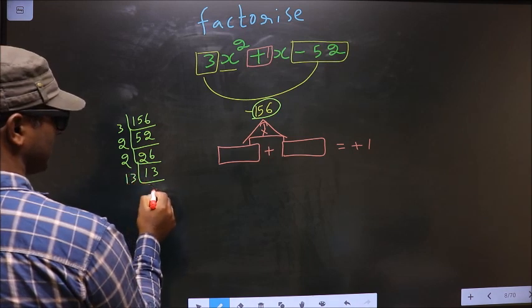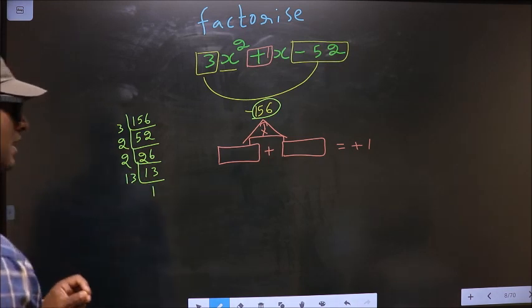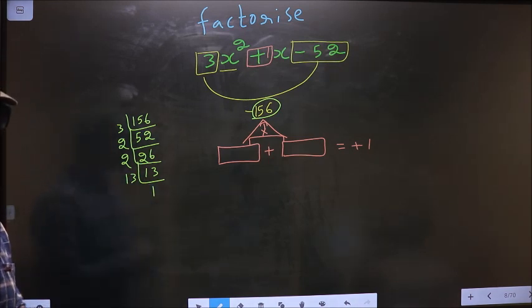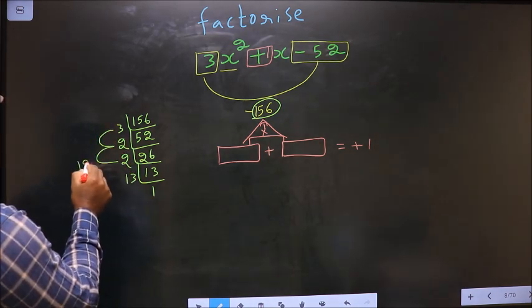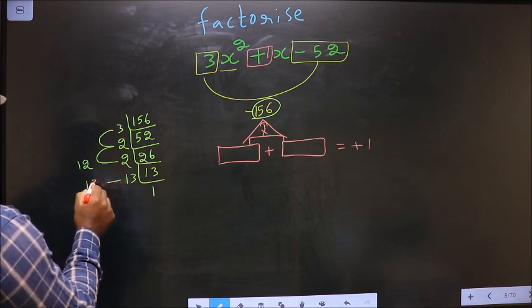Now 13 is prime, so 13 and 1. So now the 2 numbers should be 3 into 2, 6. 6 into 2, 12. And the second number is 13.